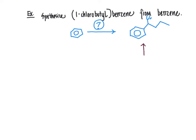Working one step back: how do we make the chlorine-substituted product in one step? Based on what we just learned, we react butylbenzene with chlorine and light and heat. That reaction replaces the benzylic hydrogen at position one with a chlorine atom, giving us our target. So one step back in the synthesis is butylbenzene.